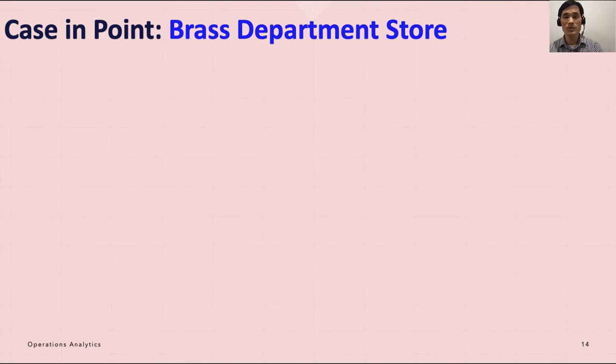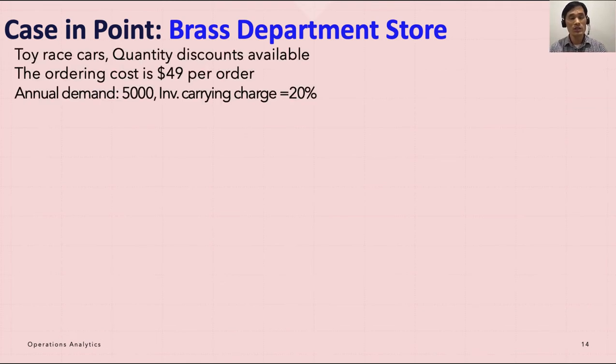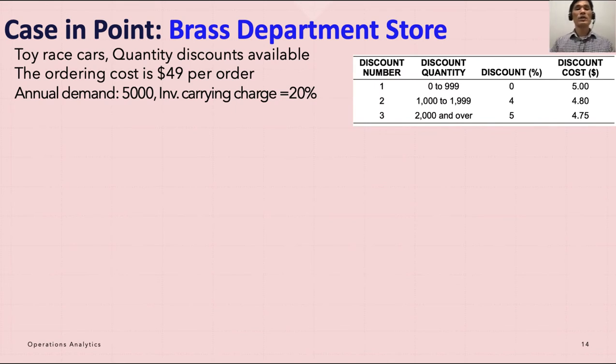Let's take an example: the Brass Department Store. This store sells toy race cars, and quantity discounts are available. The ordering cost is $49 per order, annual demand is 5,000 cars, and inventory carrying cost is 20%. The discount is available depending on the number of products people are buying. For zero to 999, there's no discount and the basic price is $5. If 1,000 to less than 2,000 cars are sold, there's a 4% discount, so $4.80 per unit. If it's greater than 2,000, there's a 5% discount, which is $4.75 per toy.